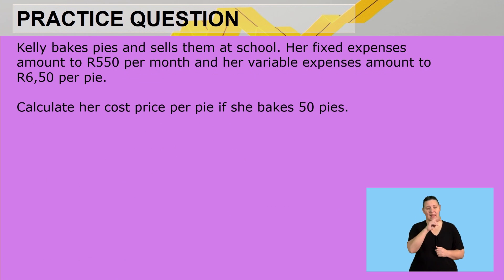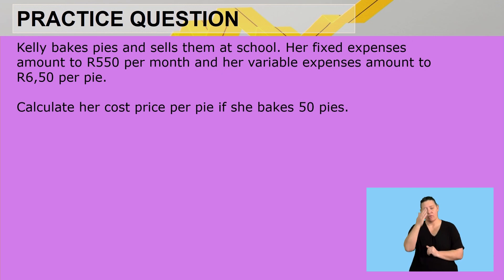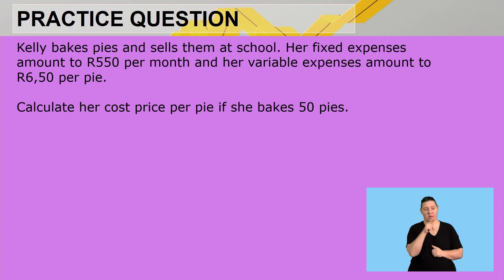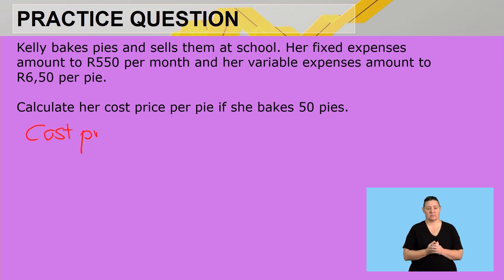Kelly bakes pies and sells them at school. Her fixed expenses are R550 per month and her variable expenses amount to R650 per pie. Calculate her cost price per pie if she bakes 50 pies. Remember the cost price per unit is the fixed cost plus the variable cost.